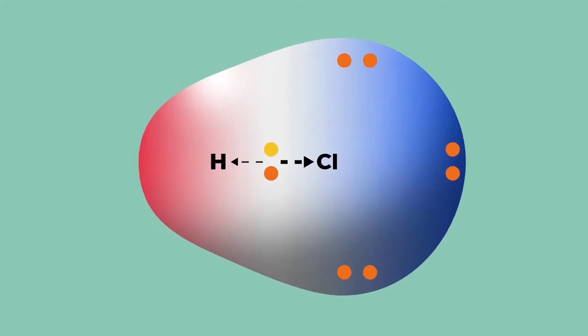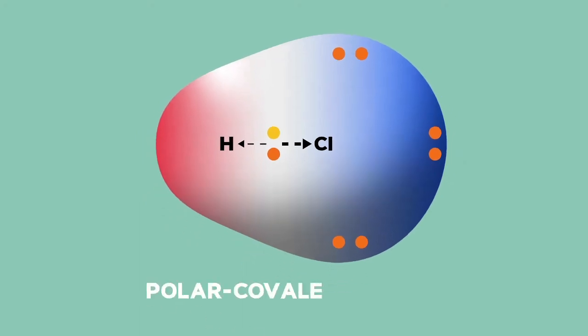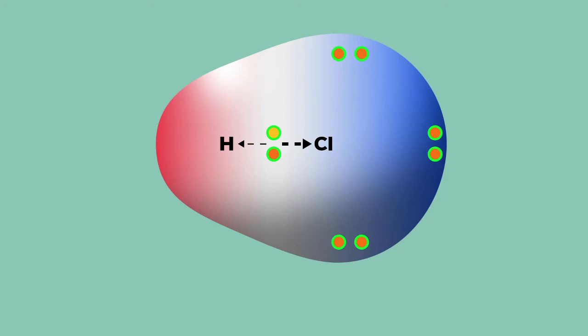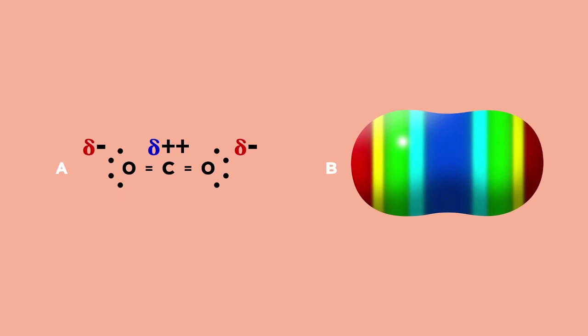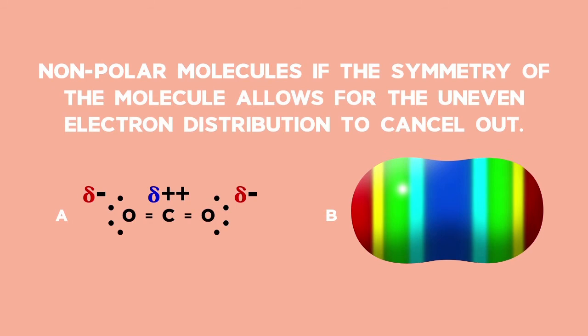When the electronegativity difference is big enough to cause an uneven distribution of electrons, but not great enough to transfer electrons, we end up with polar covalent bonds. These polar covalent bonds usually cause an overall uneven electron distribution in the molecule, and the molecule becomes a polar molecule with one side slightly positive and the other slightly negative. It is possible that these polar covalent bonds can still result in non-polar molecules if the symmetry of the molecule allows for the uneven electron distribution to cancel out.